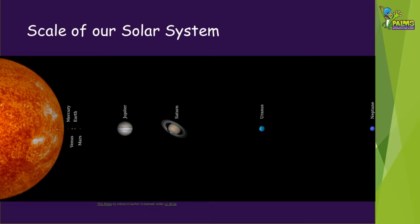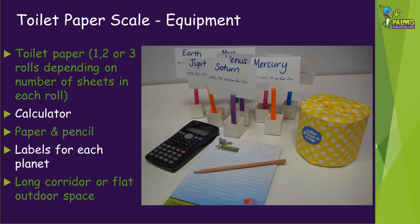How many sheets of toilet paper do you think it will take to reach from the sun to Neptune? To make your toilet paper scale of the solar system, you'll need the following equipment: one or two rolls of toilet paper, a calculator, some paper and a pencil, labels for each planet — we've used some cardboard attached to straws — and you'll also need a long corridor or a flat outdoor space.